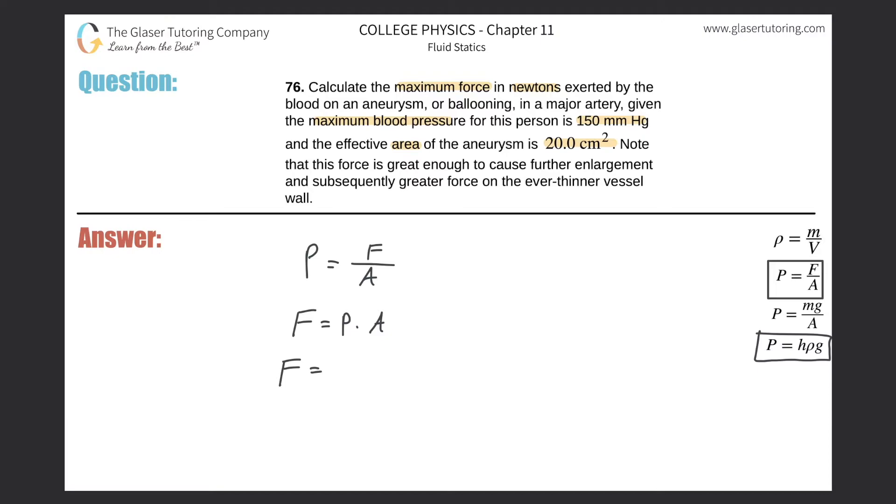So I'm going to do that here. The pressure is going to be equal to the height of the mercury, because that's how they're giving me the pressure, times the density of that mercury, then multiplied by gravity. This is all then going to be multiplied by the overall area.